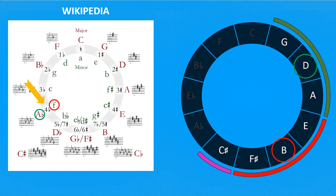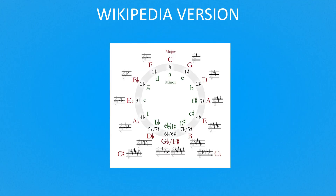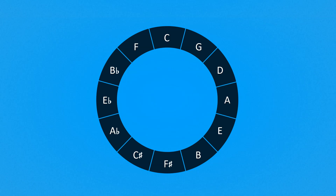Of course everything works also counterclockwise with flat notes. Let's move to A flat major. In this case we have four flat notes. In the key signature, the flat notes are B flat, E flat, A flat, and D flat. Setting A flat as the major scale on the circle, we get all the notes that belong to the A flat major scale, and also the flat notes: B flat, E flat, A flat, D flat. All the information from the Wikipedia circle can easily be obtained from our simple circle with just a few tricks.